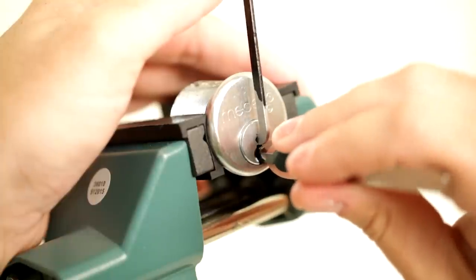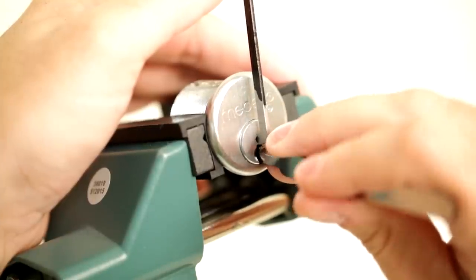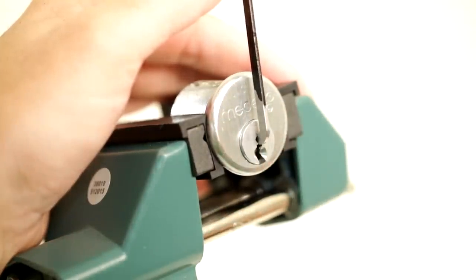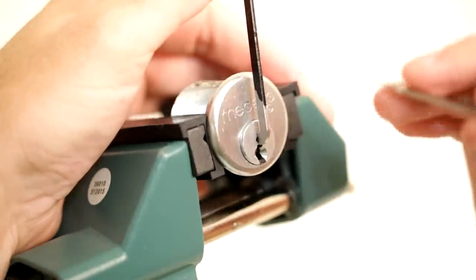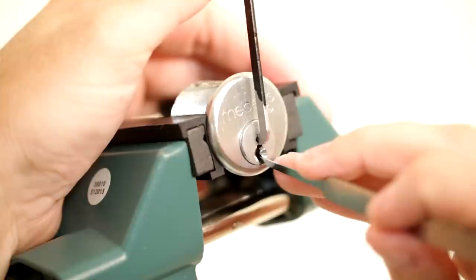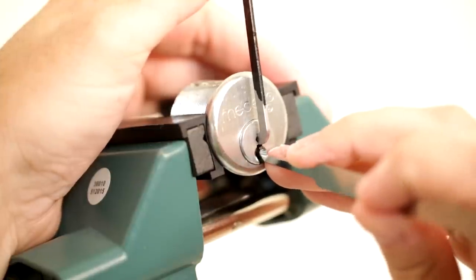Alright, got pin five to shear and got a rotation of the core. Let's try rotating them some here. So now I'm gonna apply heavier tension and see which ones bind.